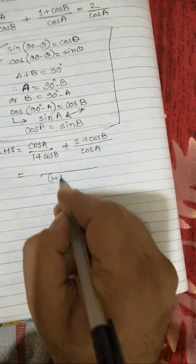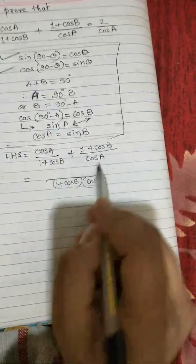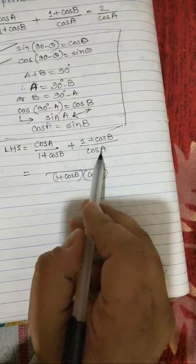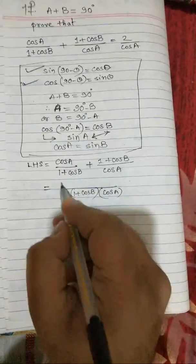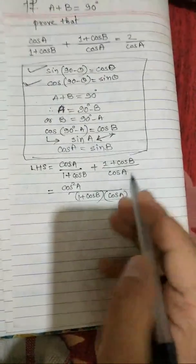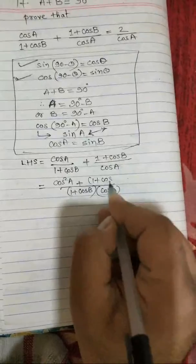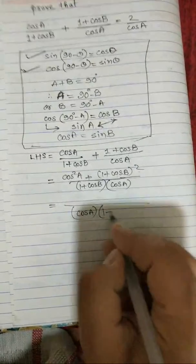We will take LCM. The LCM would be 1 plus cos b multiplied by cos a in the denominator. These two will get multiplied, and in the numerator we multiply each numerator by the other's denominator. So we get cos squared a and then 1 plus cos b whole squared.